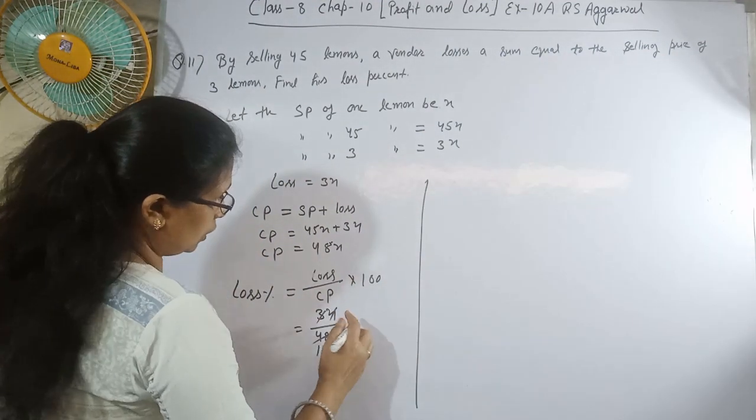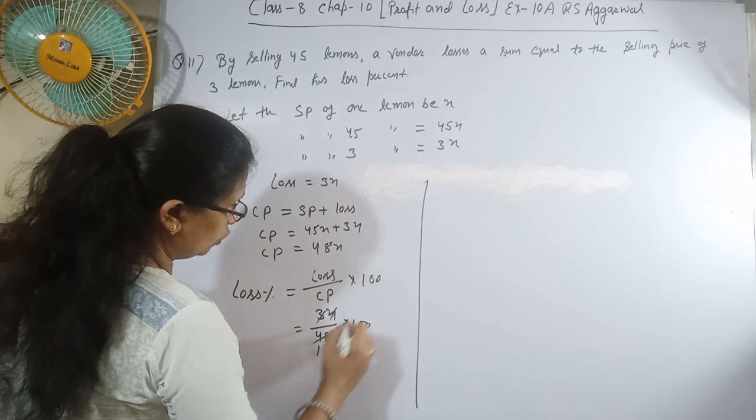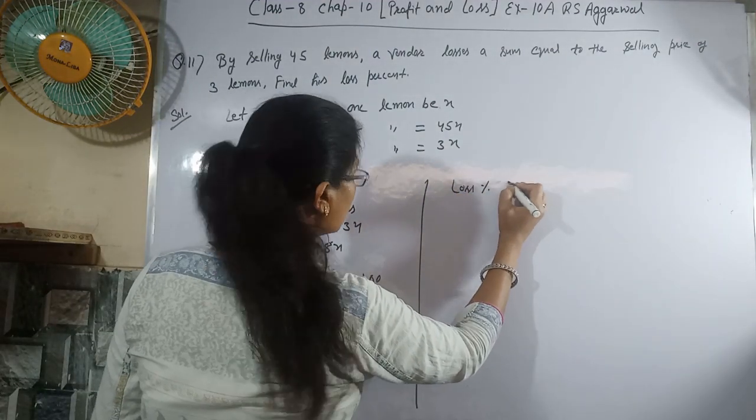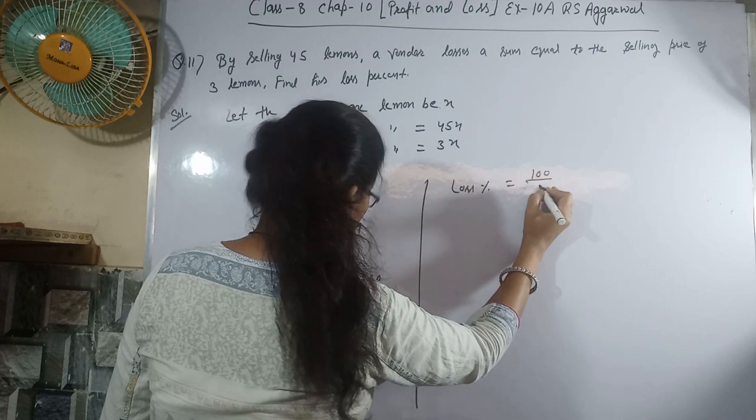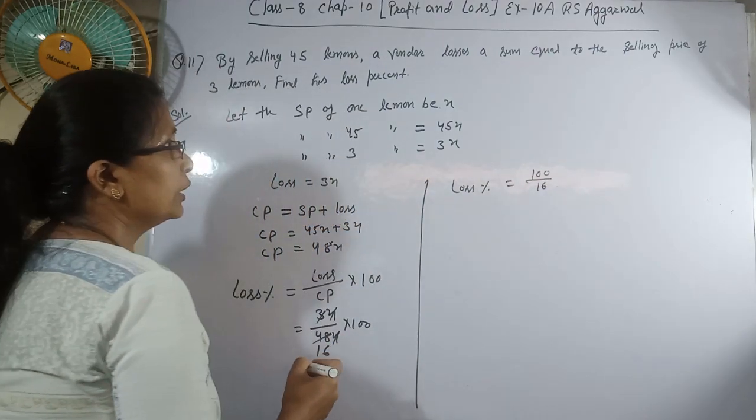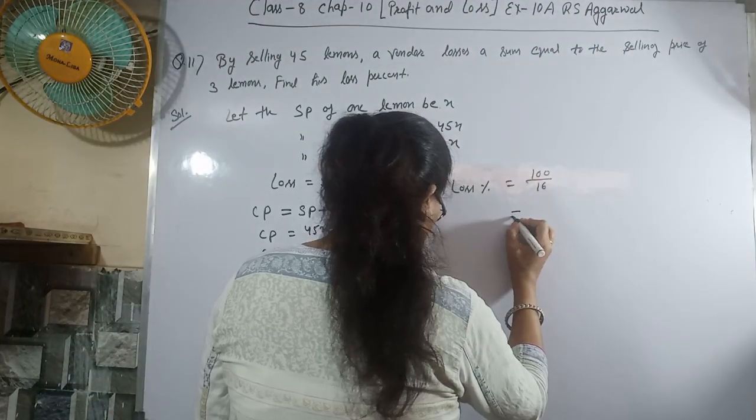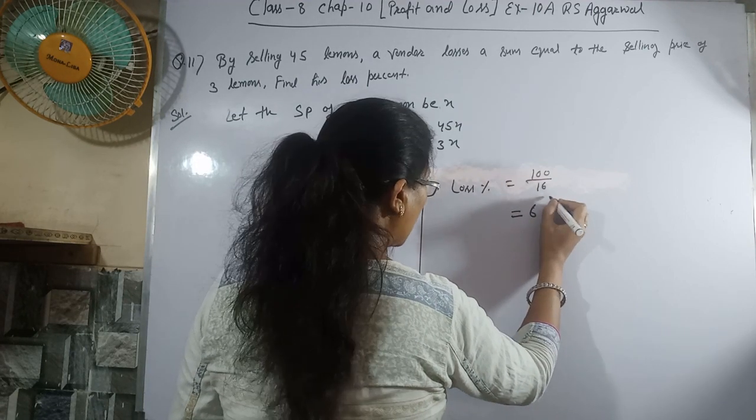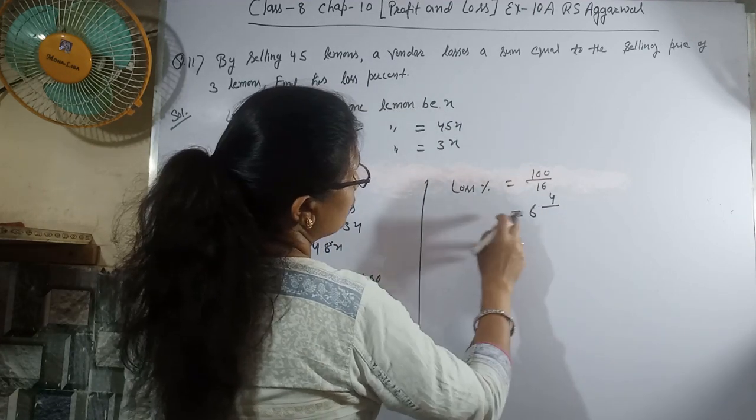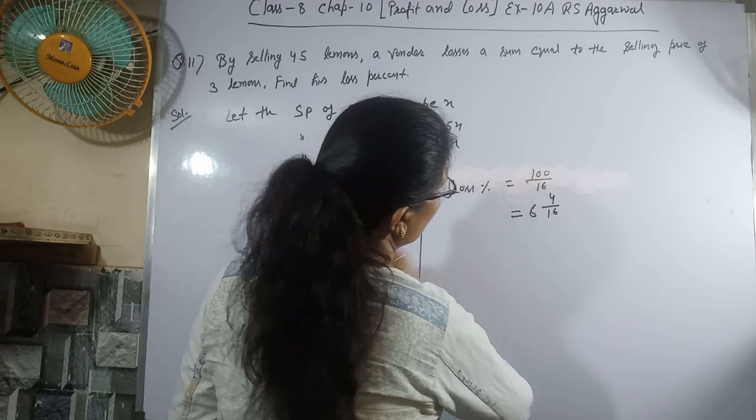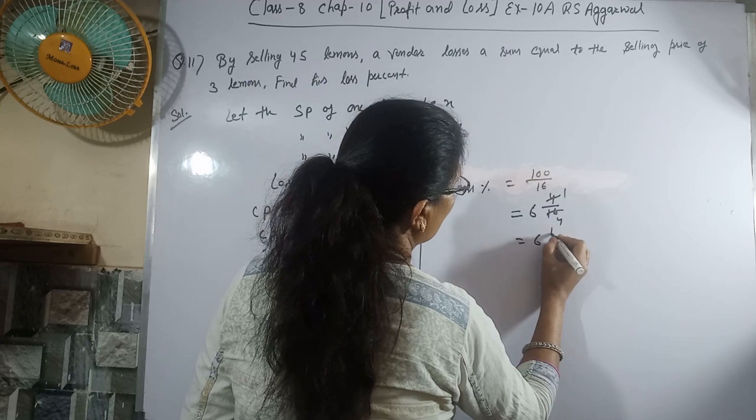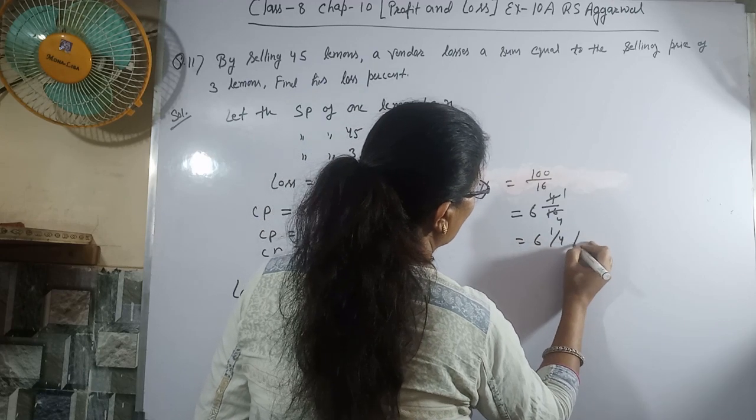Multiplying by 100, loss percent equals 100 divided by 16. When you divide, you get 6 whole 1/4 percent.